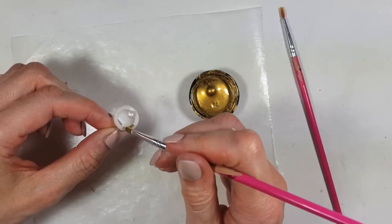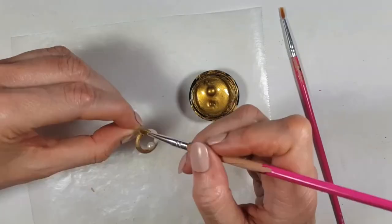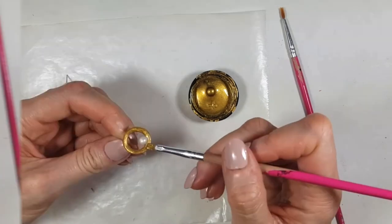Then to paint the rest of the earring, I'm going to be using this gold acrylic paint and my tiny brushes, giving this a couple of coats until it's gold enough.